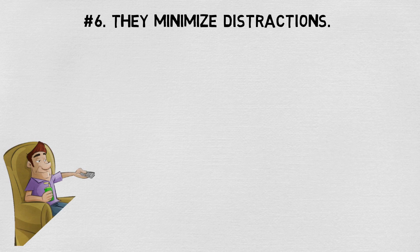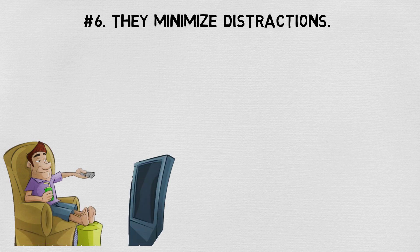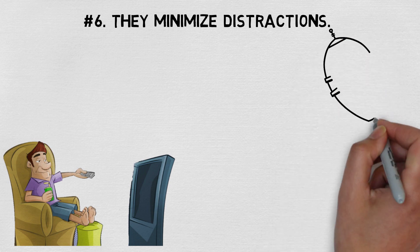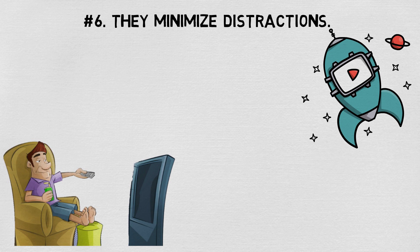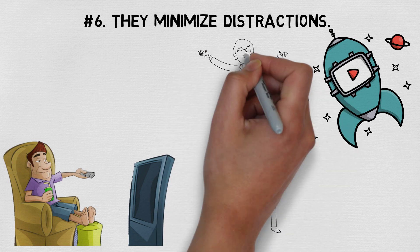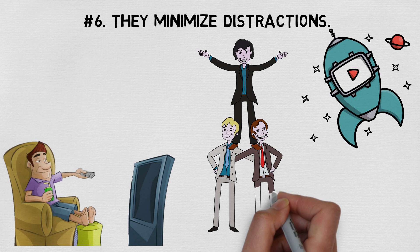Number six, they minimize distractions. TV, predictable as it is, still has the power to keep us glued to our seats for hours at a time. The same can be said for time-wasting social media apps or games on our phones or computers. Intelligent people know that time wasted is time lost and they aren't willing to give up their time without gaining something in return.